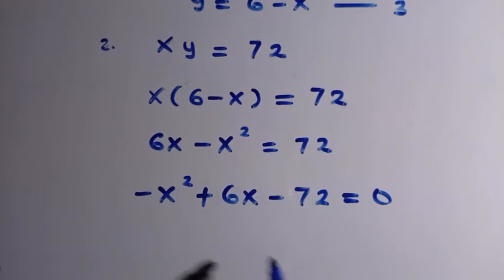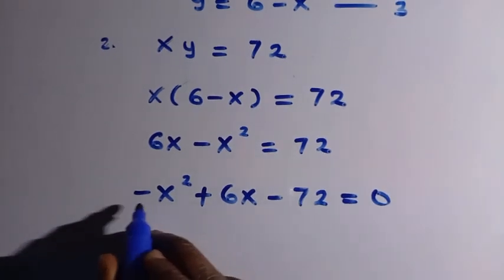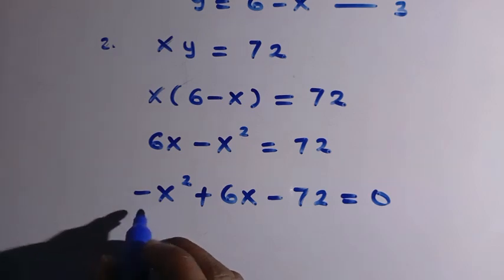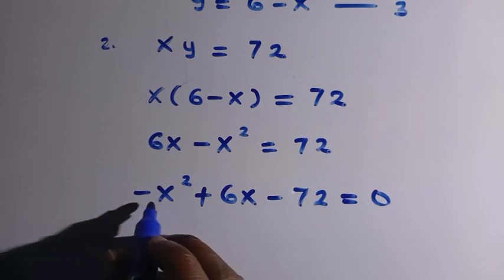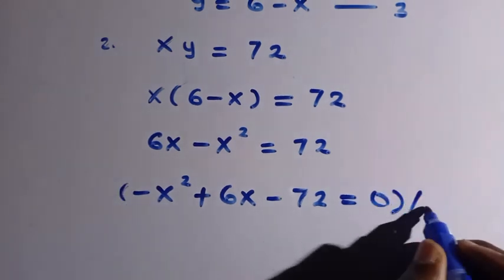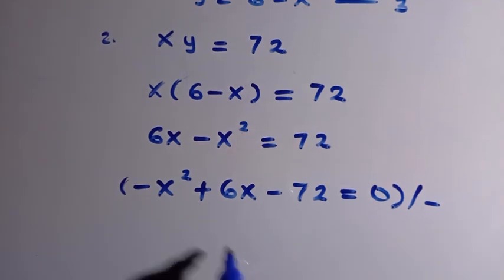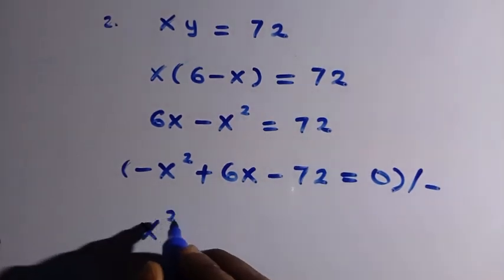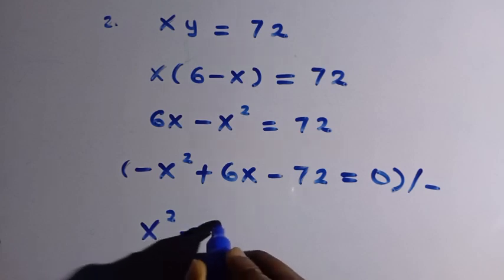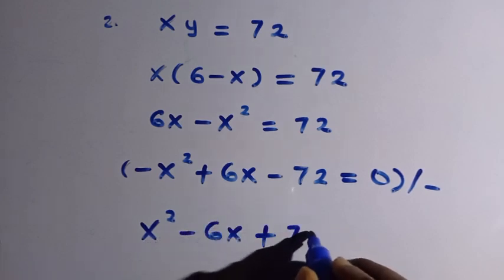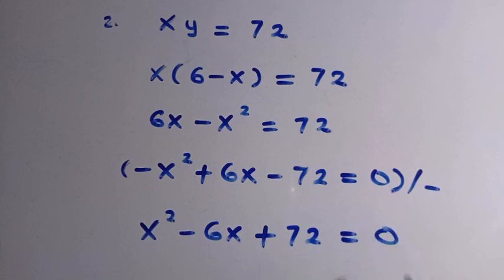Having a negative leading coefficient doesn't make sense to start the equation, so we divide everything by minus 1. Minus divided by minus gives plus x squared, and here is minus 6x, so plus 72 equals 0.